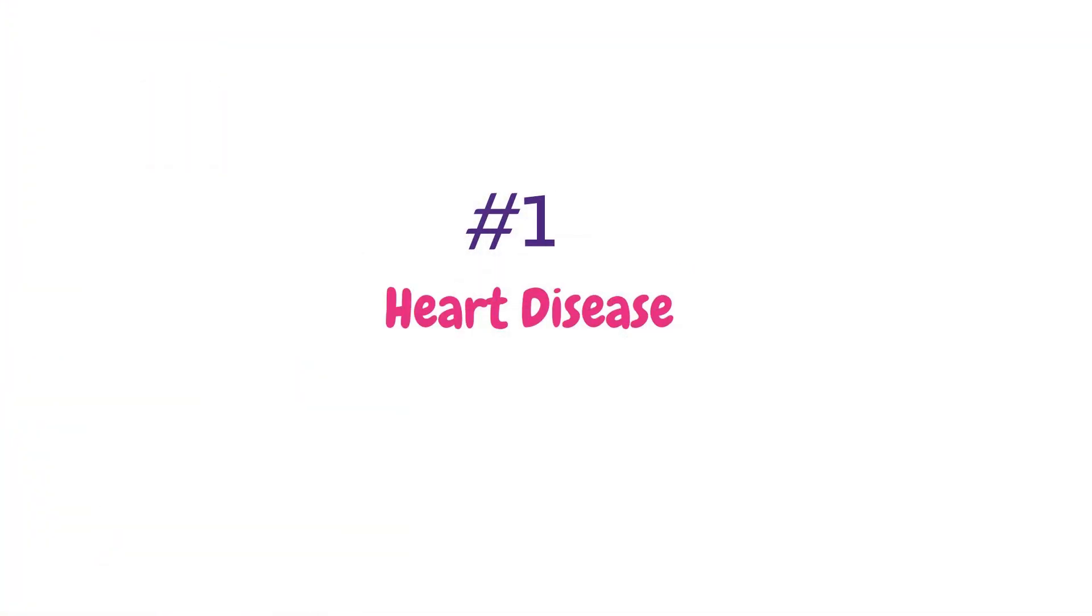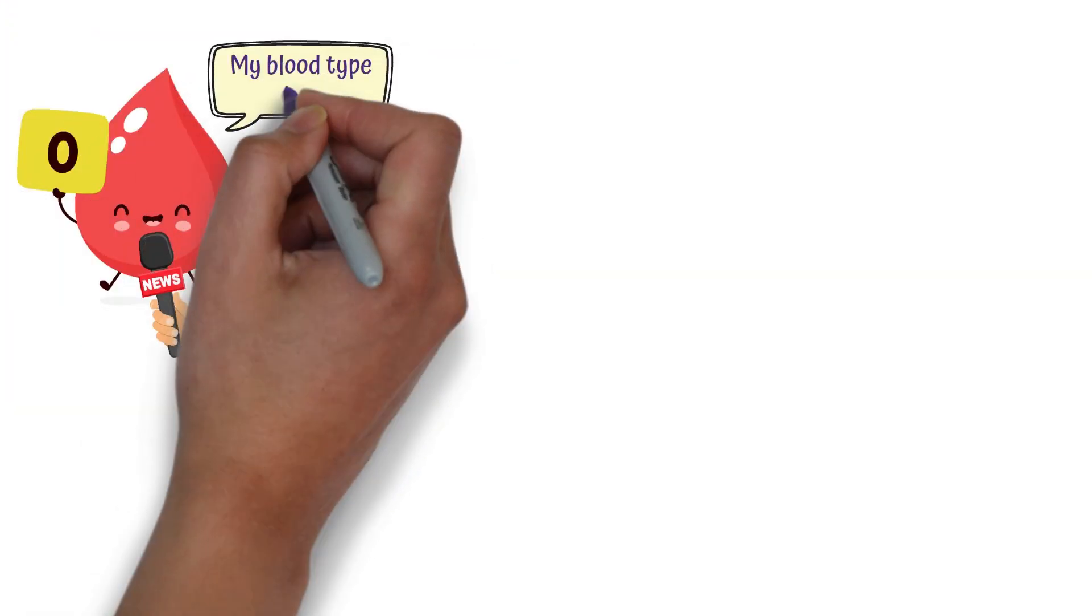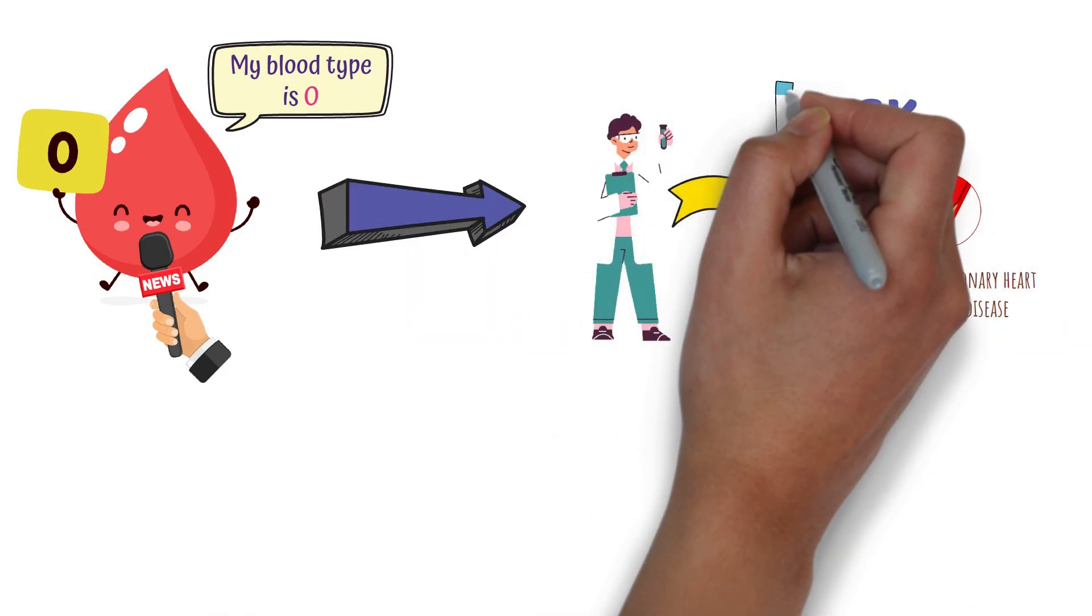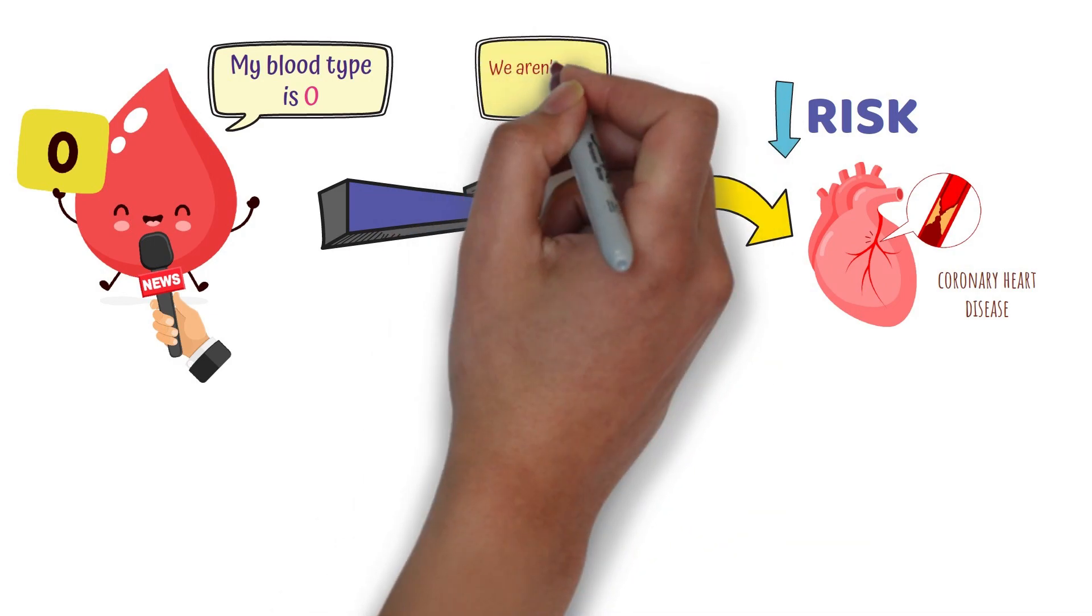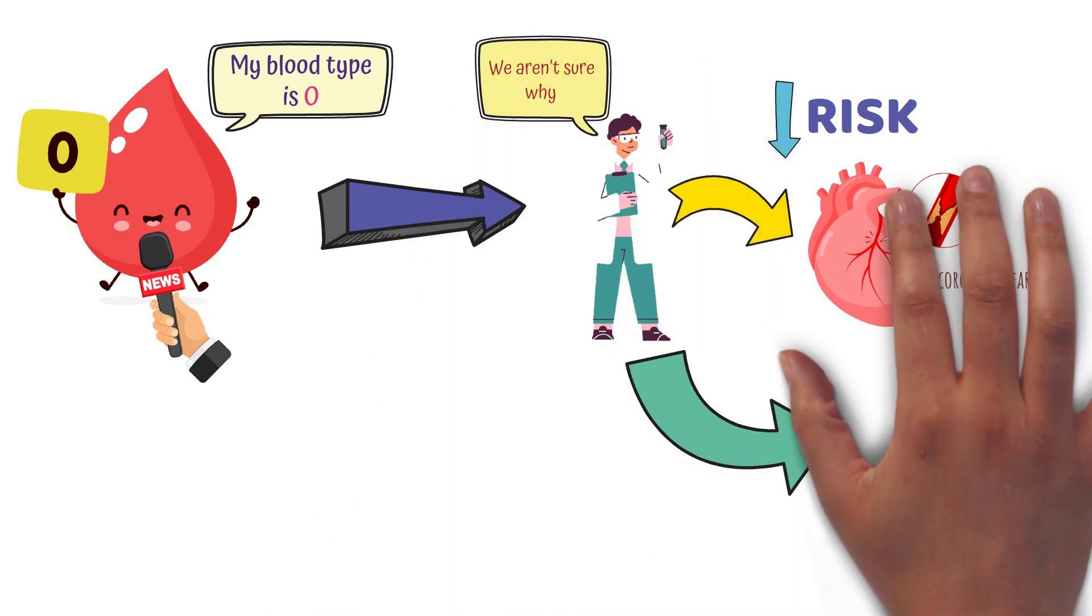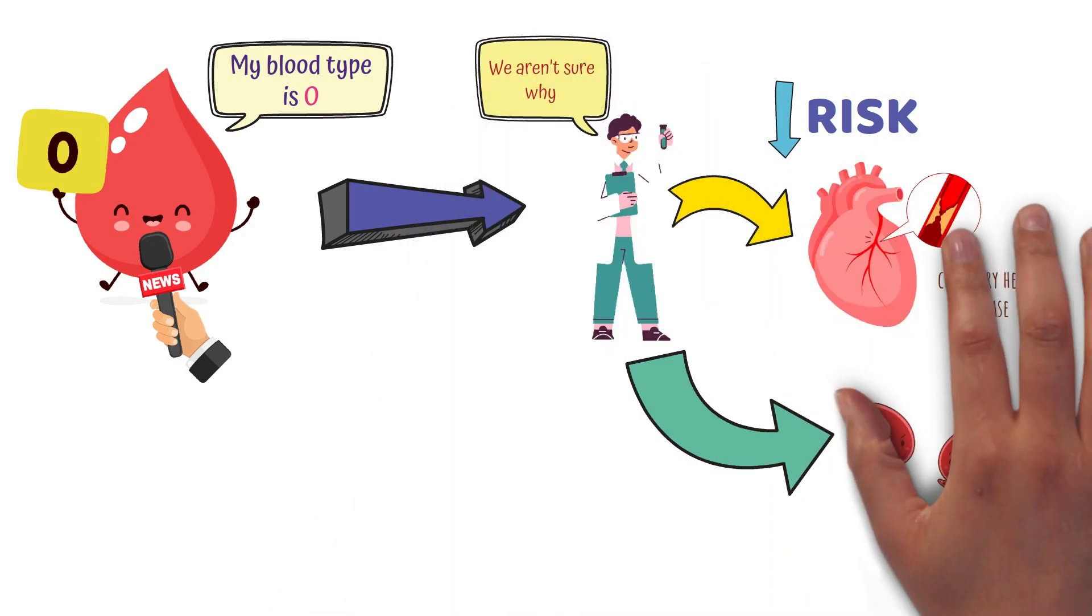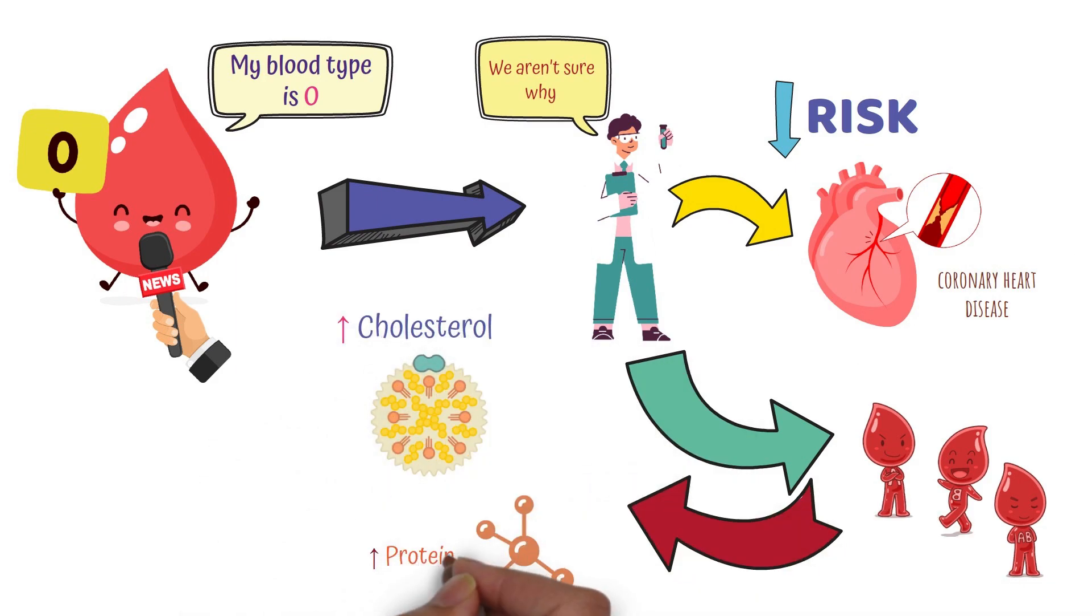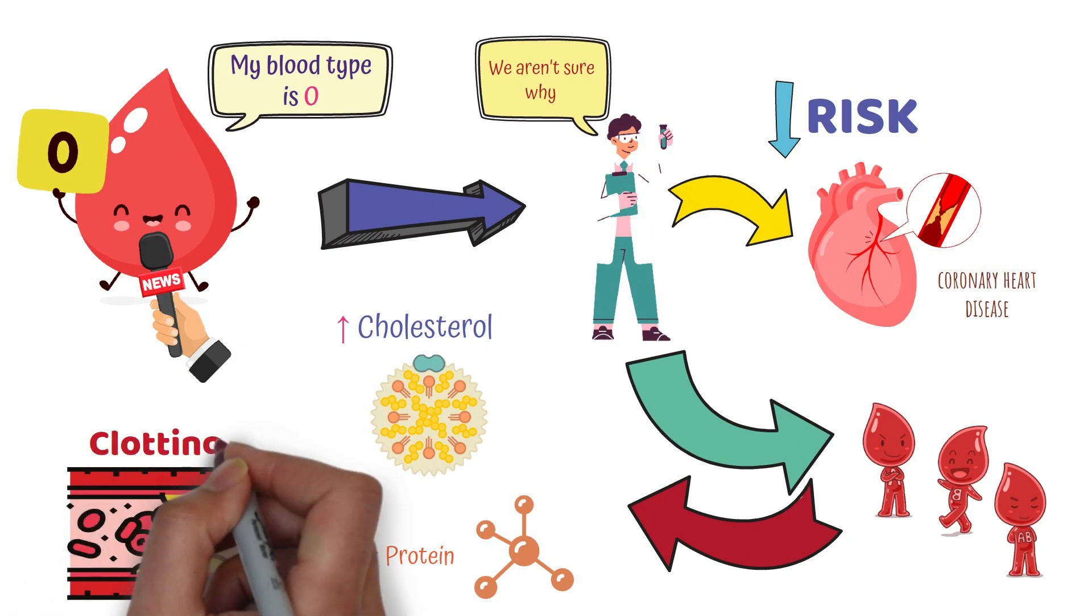Number one, heart disease. There is good news for all blood types. Research shows your risk of coronary heart disease tends to be lower. Experts aren't sure why. Some think it might be because other blood types are more likely to have higher cholesterol and higher amounts of a protein that's linked to clotting.